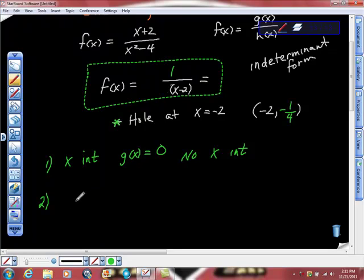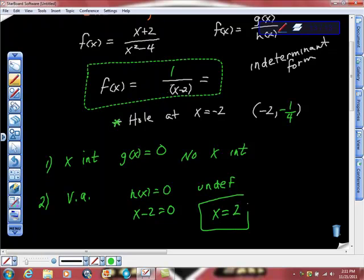So, what comes next? Vertical asymptote. Vertical asymptote is where h of x equals 0, right? It's where this thing becomes undefined. So we have x minus 2 equals 0, x equals 2. I'm going to put a little note around this and put VA for vertical asymptote.